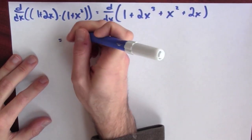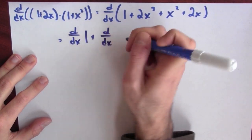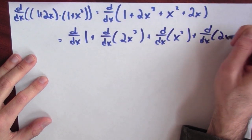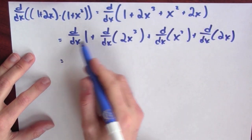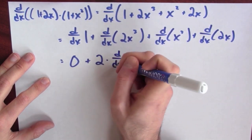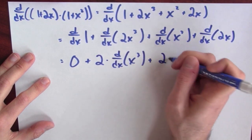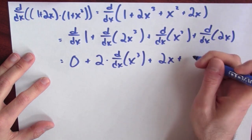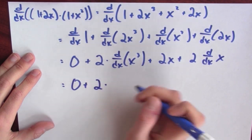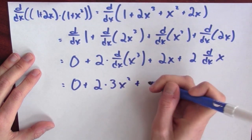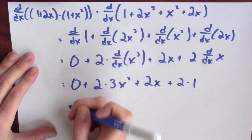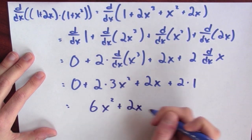This is the derivative of a big sum, so it's the sum of the derivatives: the derivative of 1, the derivative of 2x³, the derivative of x², and the derivative of 2x. The derivative of 1 is 0. For the constant multiple of x³, I can pull out the constant. The derivative of x² is 2x, and for 2 times x I can pull out the constant multiple. Now 2 times the derivative of x³ is 2 times 3x², plus 2x, plus 2 times the derivative of x, which is 2 times 1. Written more nicely, this is 6x² + 2x + 2.